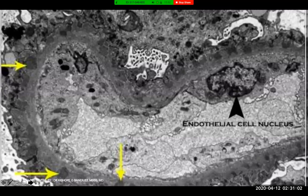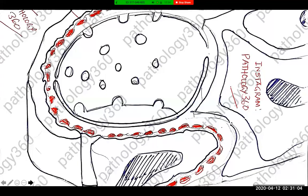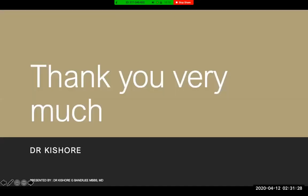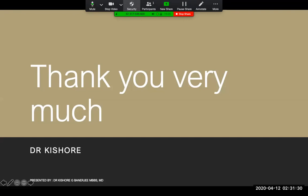So this is a typical case of membranous nephropathy because the patient presents with nephrotic syndrome features in an adult, with non-selective proteinuria, a spike and dome pattern on biopsy, thickened capillary walls, and sub-epithelial immune complex deposits. The diagnosis is straightforward — membranous nephropathy. That's all for this session. Thank you very much for joining; really appreciate it.